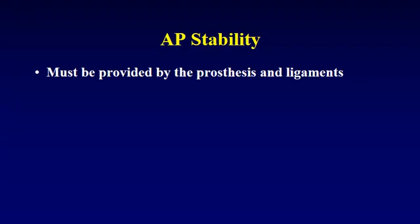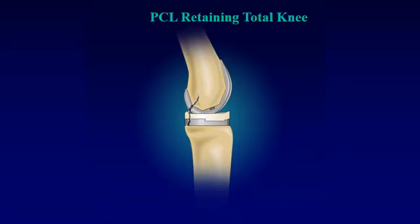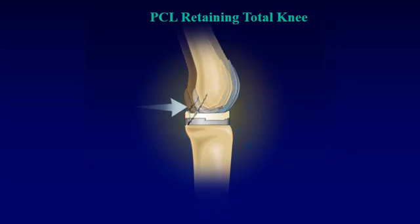AP stability after a total knee replacement must be provided by the prosthesis and the ligaments. In a standard posterior cruciate ligament retaining knee, the ligament is modeled as being somewhat lax, because the posterior cruciate ligament is lax in extension, and it's very difficult to make it tight in extension without being too tight in flexion. What is not modeled here are the collateral ligaments. But if the collateral ligaments aren't tight enough to prevent the femur from moving forward, the posterior-to-anterior force moves the femur forward, and that force ends up on the extensor mechanism, which is trying to restrain the femur from moving forward.